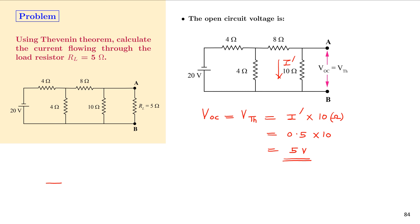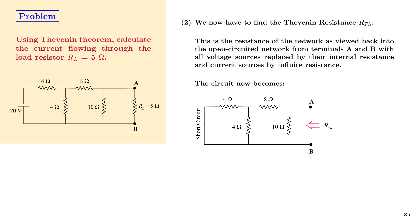According to Thevenin's theorem, the circuit reduces to a voltage source VTH and a series resistor RTH. We have calculated VTH; now we find RTH. To calculate RTH: voltage sources are replaced by their internal resistances (or a short if internal resistance is zero), and current sources are replaced by infinite resistance (open circuit).